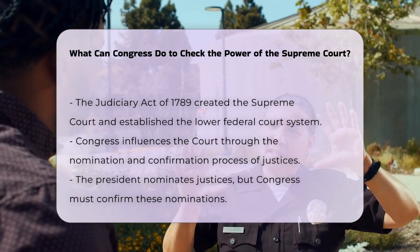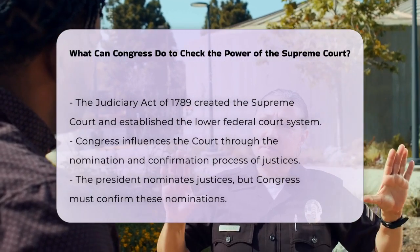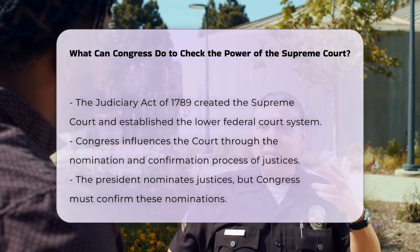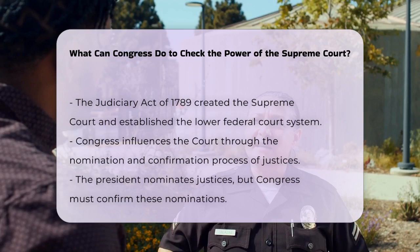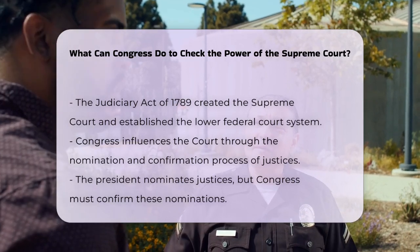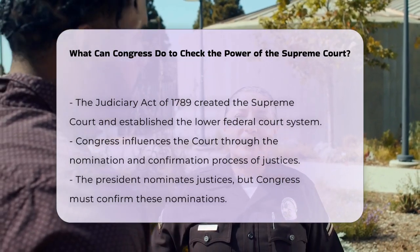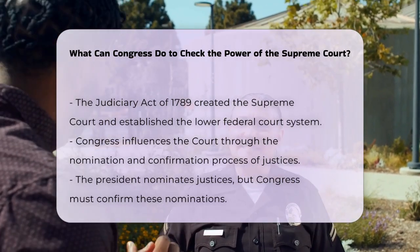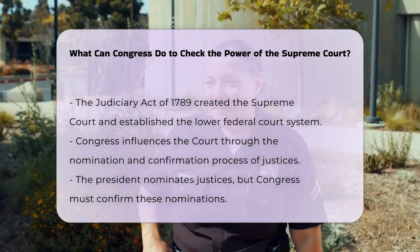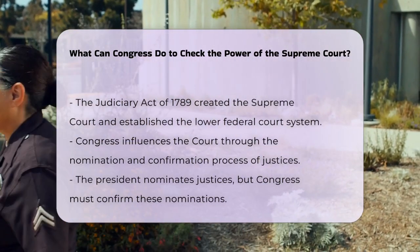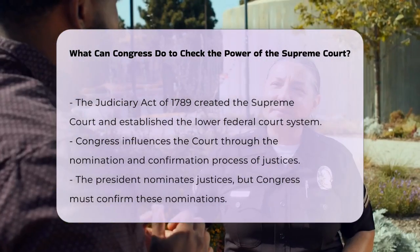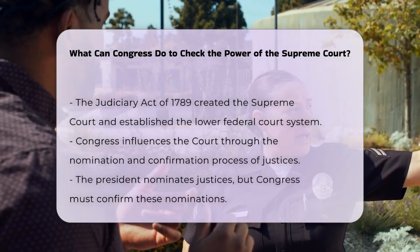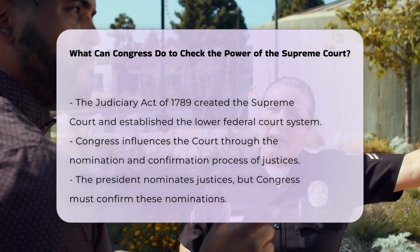In addition, Congress can influence the court through the nomination and confirmation process of justices. When a vacancy occurs, the president nominates a justice, but Congress must confirm this nomination. This gives Congress a significant say in shaping the ideological balance of the court, which can impact future decisions.